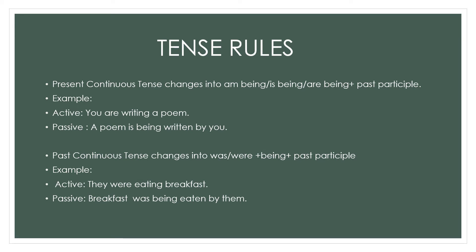Now, if a sentence is in present continuous tense, it changes into am being/is being/are being plus past participle. For example, 'You are writing a poem' is in present continuous tense, active voice. To change it to passive voice: 'A poem is being written by you' — using 'is being' plus the past participle 'written'.